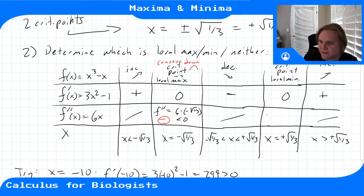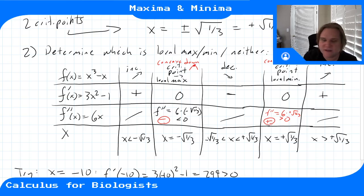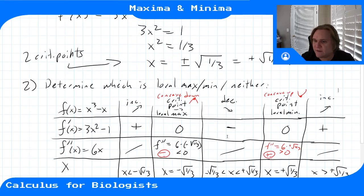At x = +√(1/3): f'' = 6(+√(1/3)), which is positive. Positive second derivative means the function is concave up—which looks like a minimum.